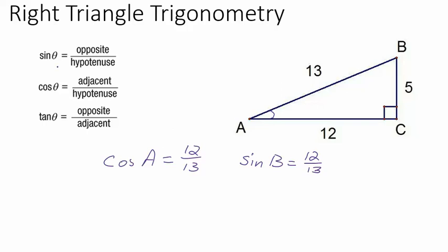When using these formulas, you're always going to use the acute angles — the angles less than 90 degrees. You wouldn't use the 90-degree angle because the side opposite it is the hypotenuse. Later in pre-calculus you'll extend these ideas to 90 degrees, but for basic right triangle trigonometry we stick to acute angles. I hope that gave you a good introduction to trigonometry — good luck, and review this video as needed.